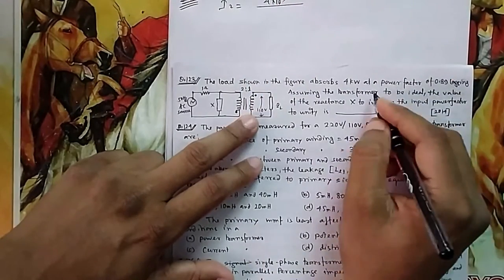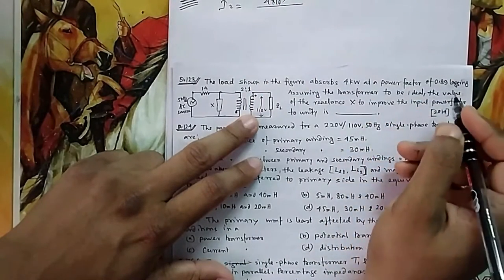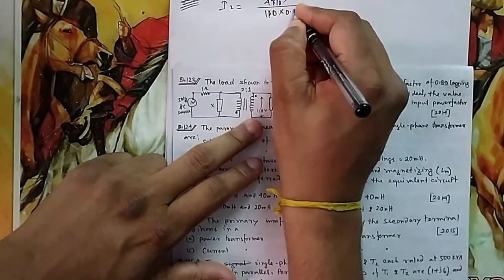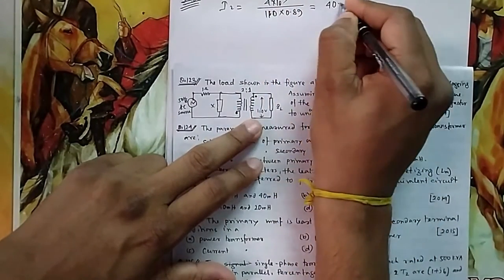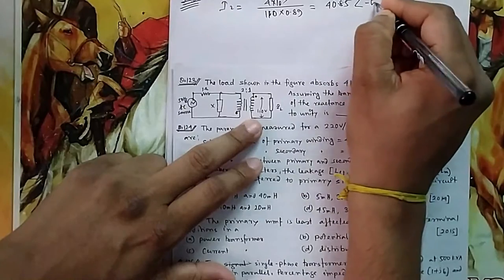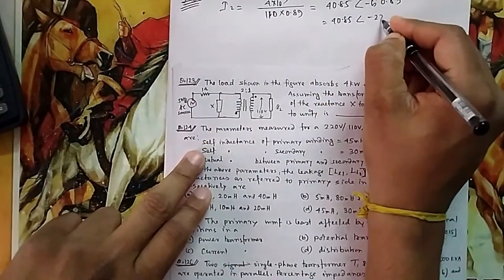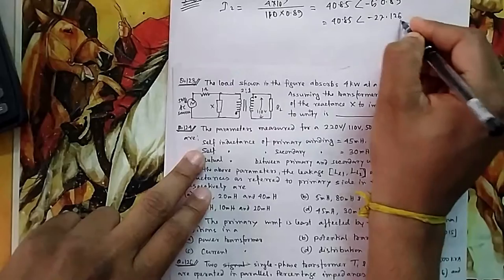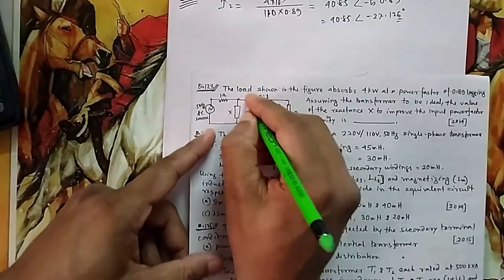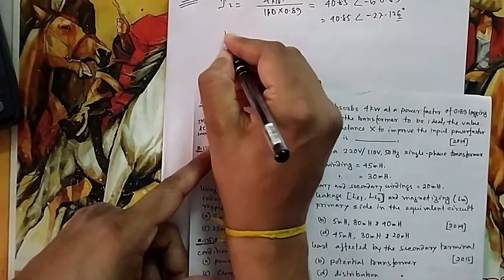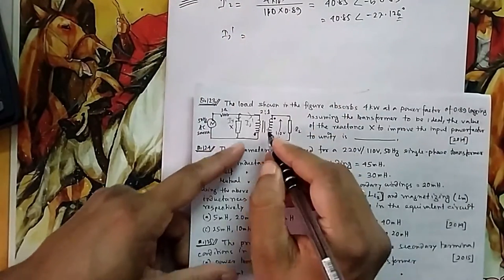So let me calculate what is this I in the secondary, I2. So if your I2 is equal to 4 times 10 to the power 3 divided by - because it is 4 kilowatt - so it is V I cos phi. Your V is 110 and power factor is 0.89. So that is 40.85 at an angle of minus cos inverse, so that is 40.85 angle minus 27.126. So if you reflect this I2 here, this will be what will be your I2 dash.